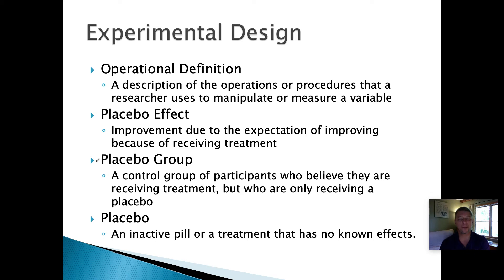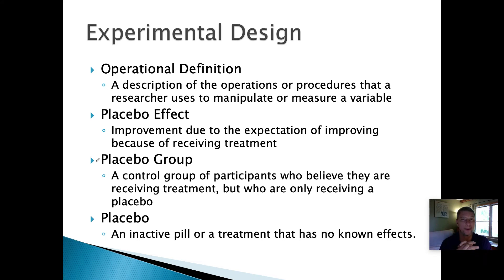When you design an experiment, you need to have an operational definition — essentially a very specific set of procedures you're going to follow in order to test your hypothesis. By definition, it is a description of the operations or procedures that a researcher uses to manipulate or measure a variable. You write all of this down in what we call a methods section, which is essentially a cookbook of instructions that tells others exactly what procedure you followed.